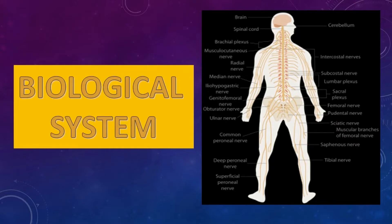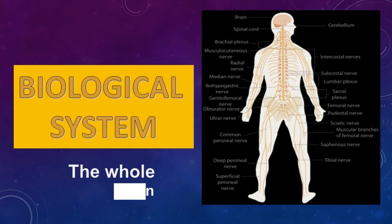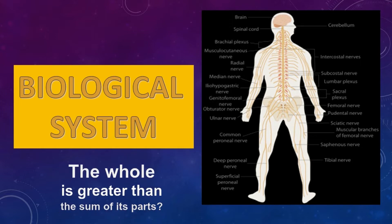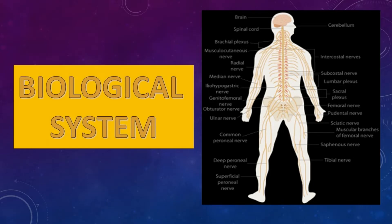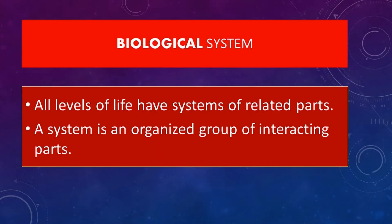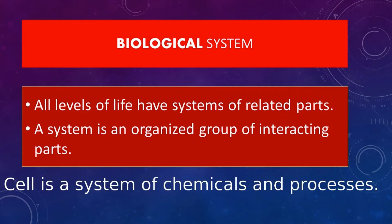The biological system. Have you ever heard the saying, the whole is greater than the sum of its parts? It actually captures the importance of how a combination of parts can form a more complex organization called a system. All levels of life have systems of related parts. A system is an organized group of interacting parts, say for example, the cell. A cell is a system of chemicals and processes.